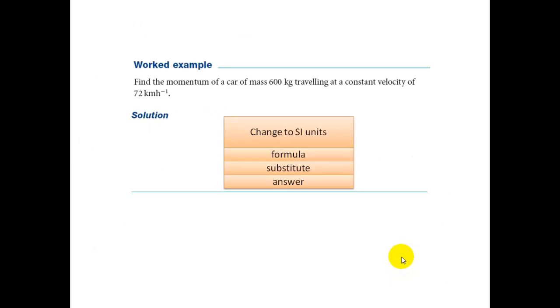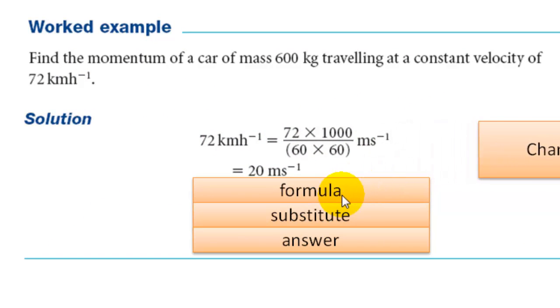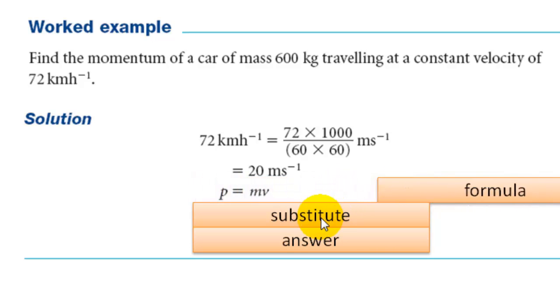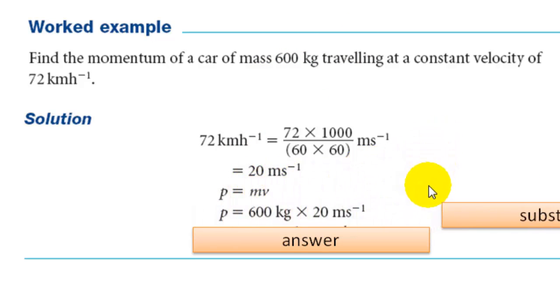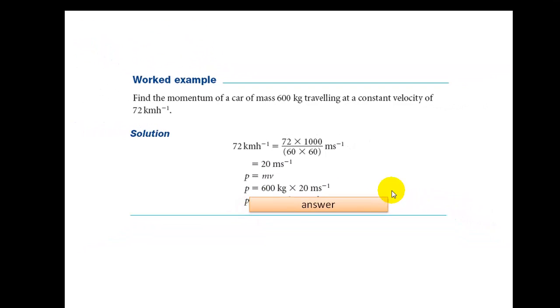Here's an example. You need to calculate the momentum of a car, 600 kg, traveling at a constant velocity of 72 km per hour. You have to change this into meters per second. So that's the first step. What is the formula for momentum? Mass times velocity. Substitute the mass, 600 kg, with a velocity, 20. And your answer will be 600 times 20 kg meters per second.